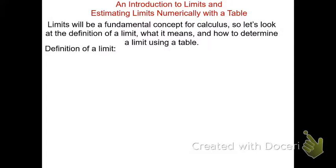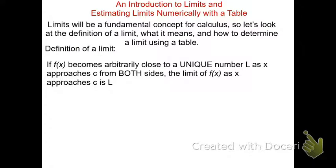Here's the definition. The definition of a limit states: if f approaches arbitrarily close to a unique number L as x approaches c from both sides, the limit of f as x approaches c is L. The notation for writing this is: the limit of f as x approaches c equals L.